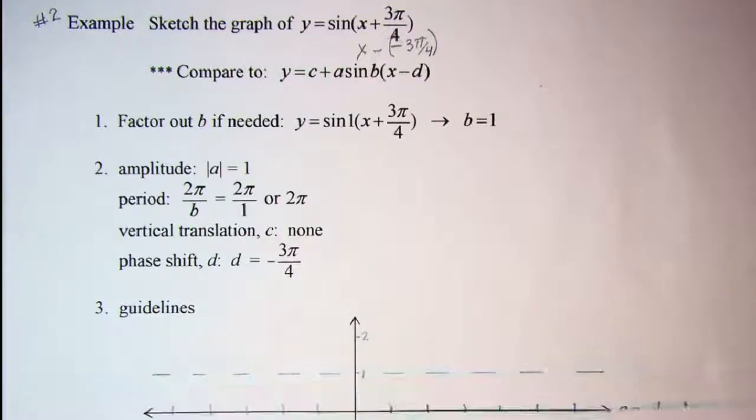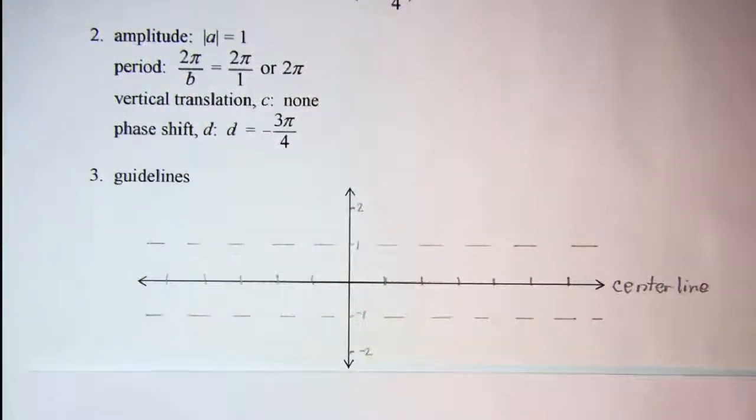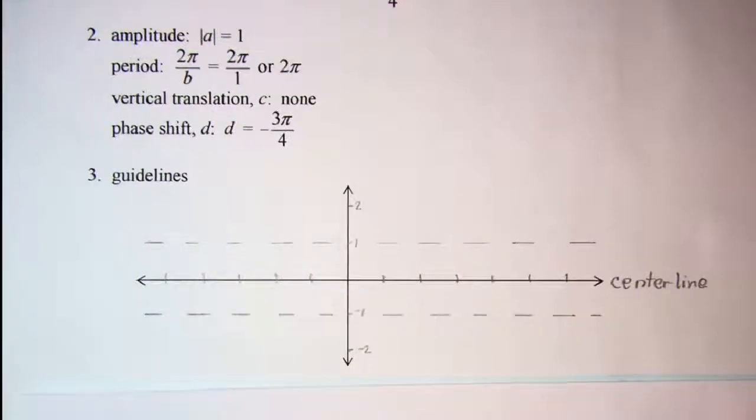Our next step is to draw in the guidelines on our graph. Our center line, since there's no vertical translation, will just be the x axis.